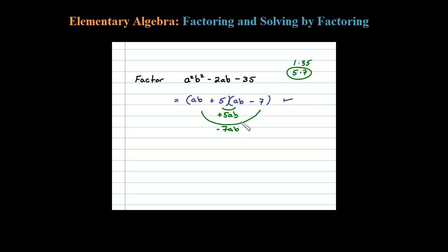And then as my last step, I'm going to go ahead and erase this because certainly at some point we're going to have to be able to do that in our head, so no need to show that. This original trinomial factors correctly as (aB + 5)(aB - 7).